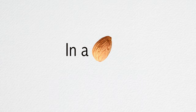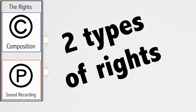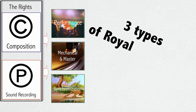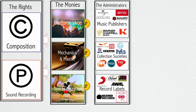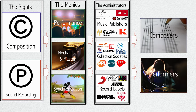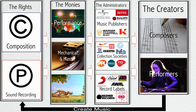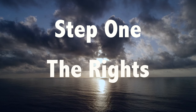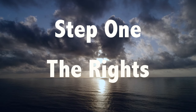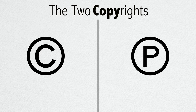In a nutshell, in the recorded music industry there are two types of rights which generate three types of royalties and fees, and which are collected and redistributed on behalf of the composers and performers by three main entities. The first aspect you have to understand when it comes to the recorded music industry are the two fundamental rights, or copyrights.